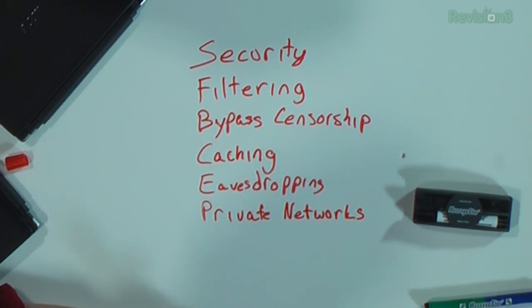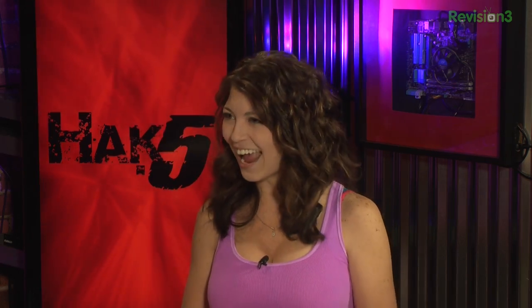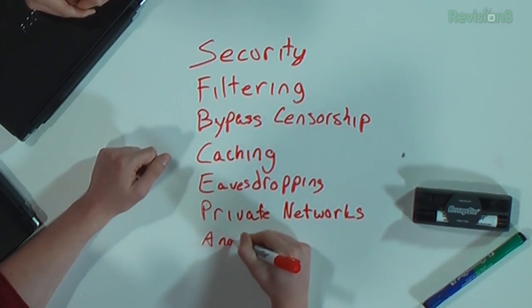Private networks: traveling abroad and need access to resources on your office network? There's a proxy for that. Bridging two or more networks, a proxy can enable access to printers, internal web servers, even private peer-to-peer networks or dark nets. And then there's anonymity. A set of proxies can provide some level of anonymity by making it difficult to trace where someone's traffic is coming from. The most notable examples include the Onion Router as well as I2P — the Invisible Internet Project. We're working up a special on those.